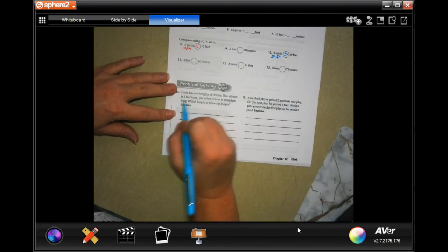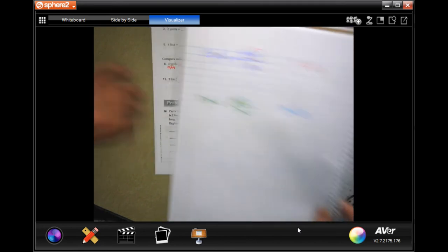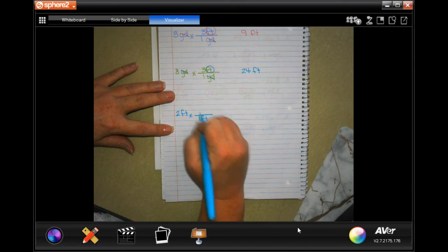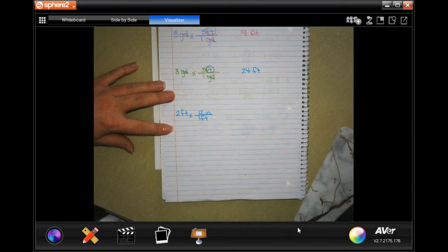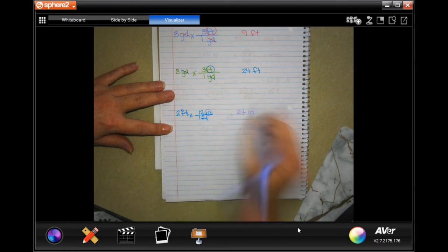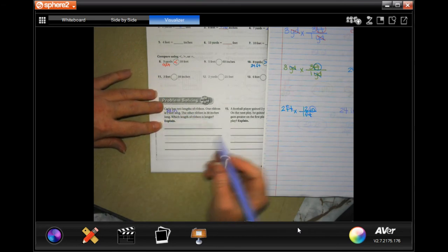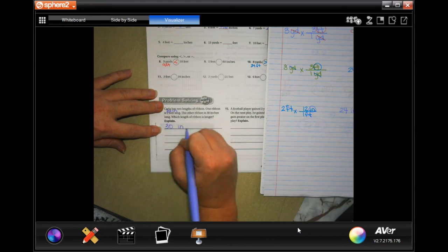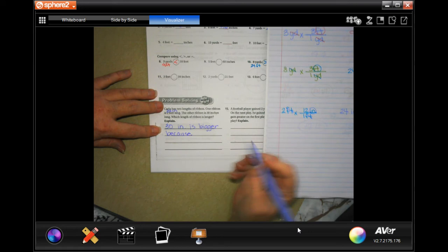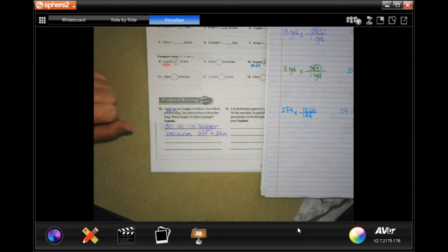Carla has two lengths of ribbon. One is 2 feet long. The other is 30 inches. So we're going to go ahead and do 2 feet. And we're going to see how many inches that is. So in 1 foot, there's 12 inches. Cross-cancel feet. I wind up in inches. That's what I want. 2 times 12, 24. So this is 24 inches. So 30 inches is bigger because 2 feet equals 24 inches. Done.